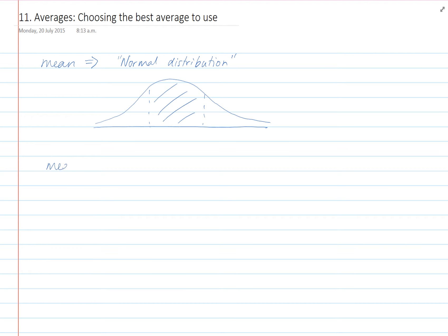The median is best to use when you have extreme values that might affect your data. Use it when you don't want extreme values to affect your average.